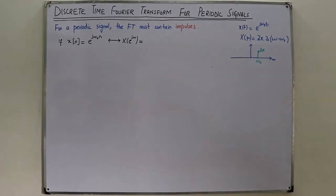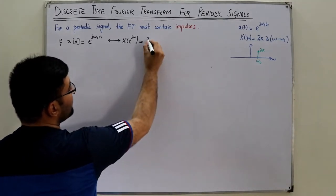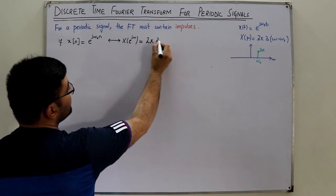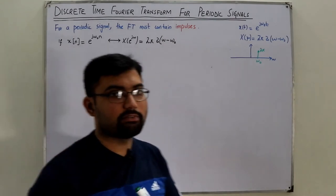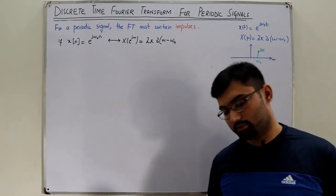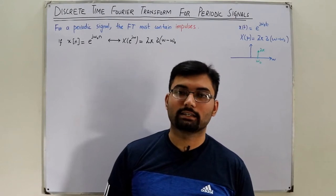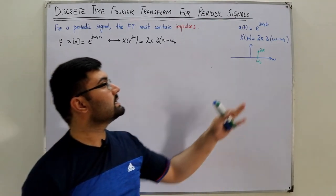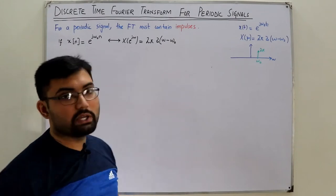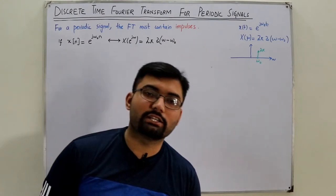In the discrete time case, the same thing happens — the Fourier transform would be an impulse of weight 2π located at ω₀ — but with a fundamental difference: the continuous time Fourier transform is non-periodic, whereas the discrete time Fourier transform is periodic with period 2π, meaning it repeats itself at every 2π interval.